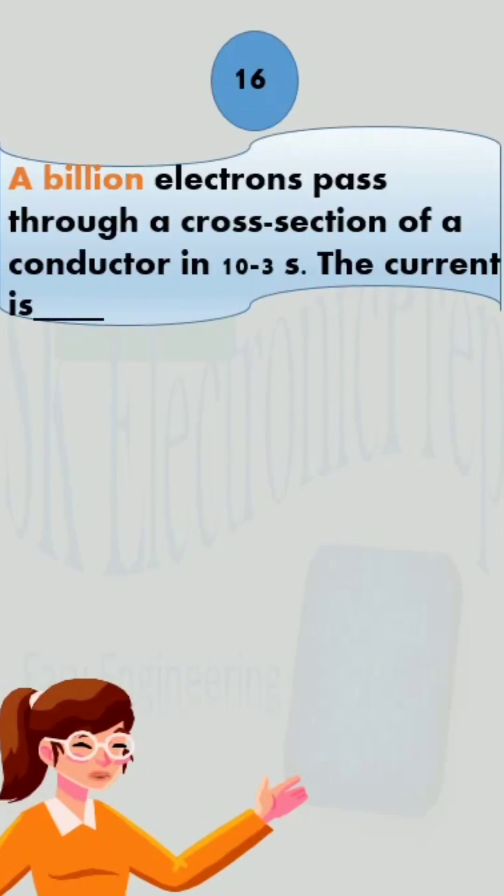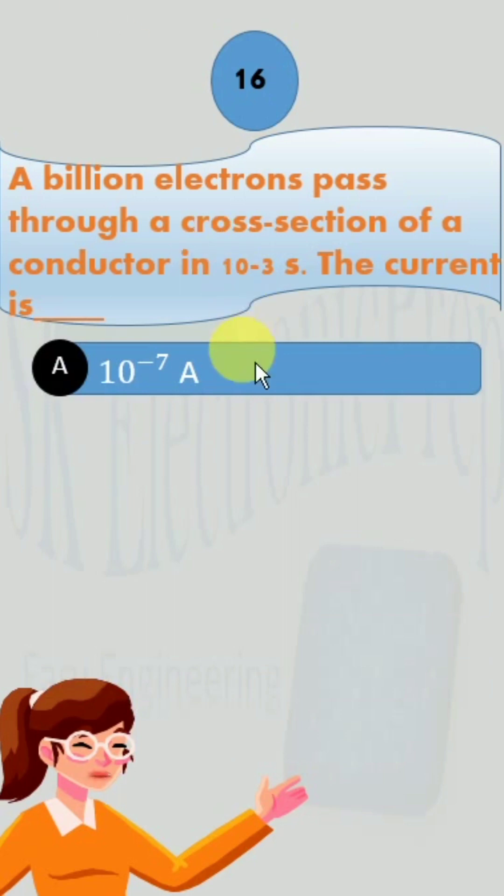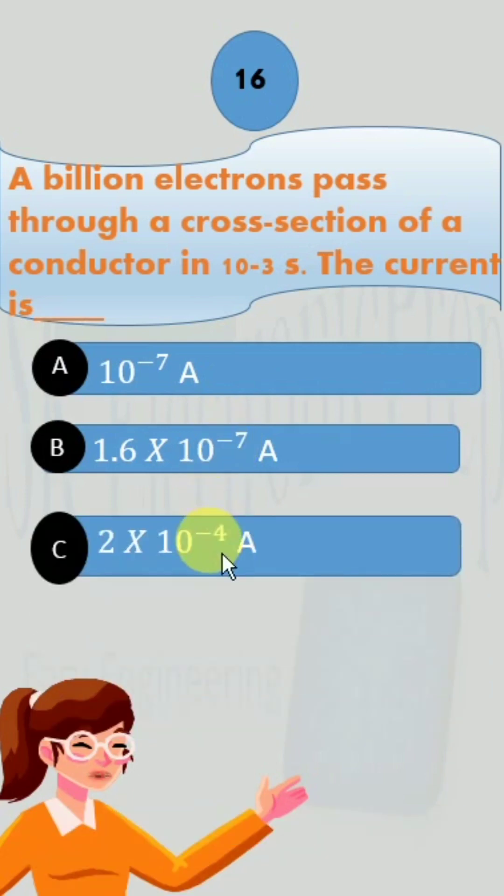A billion electrons pass through a cross section of a conductor in 10 raised to the power minus 3 seconds. The current is: option A, 10 raised to the power minus 7 ampere; option B, 1.6 into 10 raised to the power minus 7 ampere; option C, 2 into 10 raised to the power minus 4; and option D, 2.6 into 10 raised to the power minus 3 ampere.